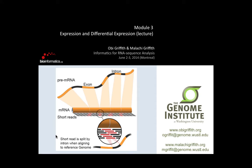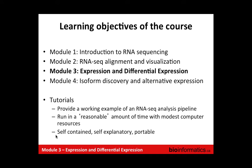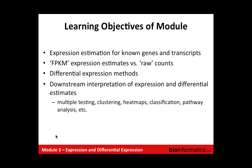Module 3 we're going to move on to Expression and Differential Expression. This is your third out of four modules. The objectives are to talk about estimating expression for known genes and transcripts, the idea of FPKM versus raw counts, differential expression methods, downstream interpretation of expression and differential estimates, and multiple testing correction.